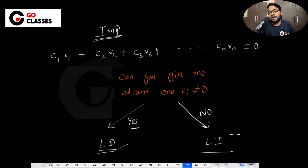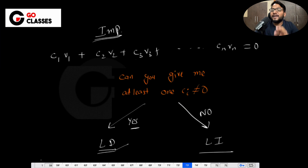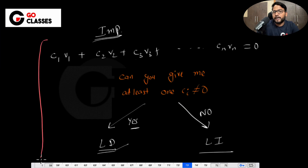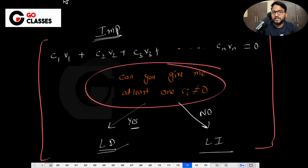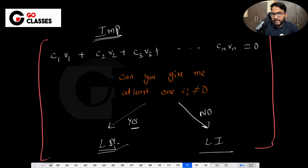One definition we have seen from the very first lecture is the mathematical definition of linearly independent or dependent vectors. Whenever you have any confusion about linearly dependent or independent, just remember this mathematical definition: put the vectors in the equation and ask if you can find at least one ci which is non-zero. If yes, linearly dependent; otherwise, linearly independent.